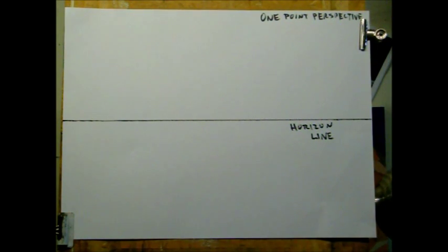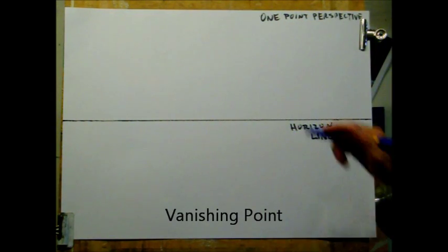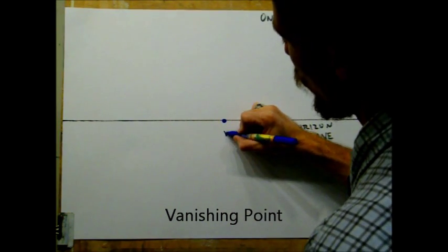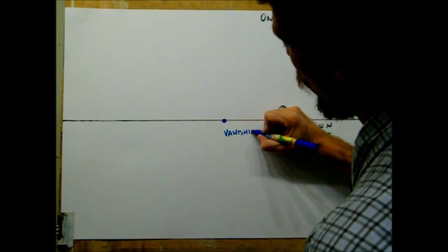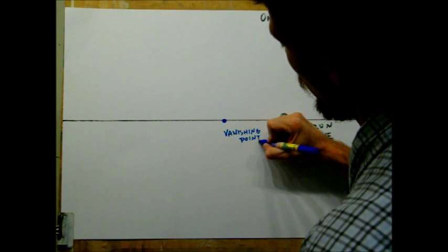This is one-point perspective, so somewhere we're going to have to put one vanishing point. For this case, I'm going to put my vanishing point towards the middle. I'm drawing it very large, and I'm going to label it vanishing point.